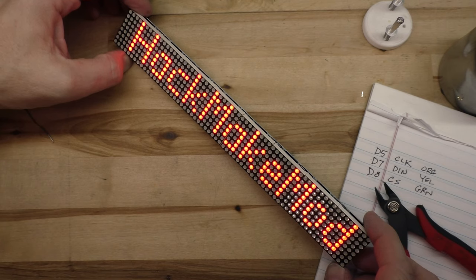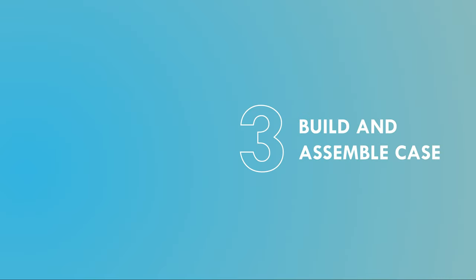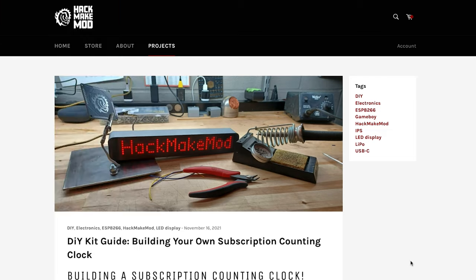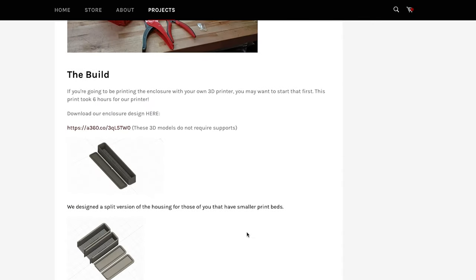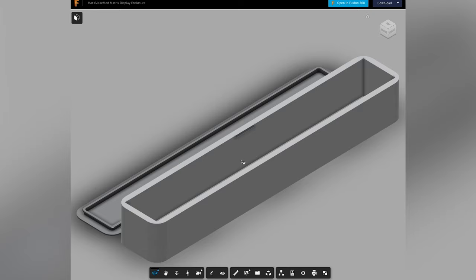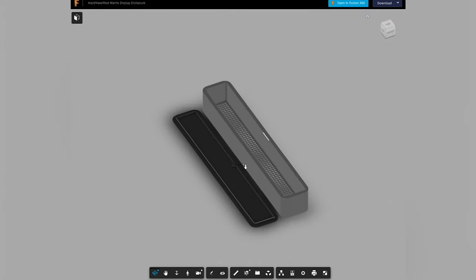Now that we have our electronics built, we need to get the case ready. Let's hop on over to 3D printer so I can show you how to get started. To get your enclosure ready, go to our site, go to projects, go to the DIY kit guide, building your own subscription counting clock. And then just scroll down to the 3D models. You'll see I have two here. One is the whole model. The other is a split version for people with smaller print beds. And you just click on that link. It'll open it up in Fusion 360 here, their online interface.